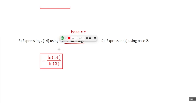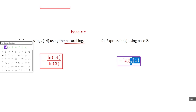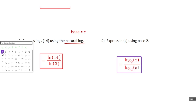Number 4 says express the natural log of x using base 2. So this is going to equal log base 2 of x divided by log base 2 of e. Although we don't see the base explicitly written in natural log, we know the base is e.